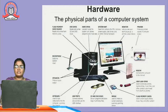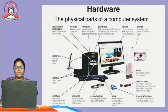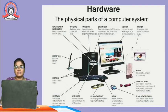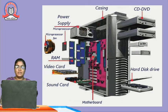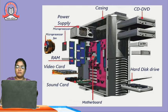Next topic is hardware. Here we have all the hardware parts of a desktop. Hardware parts include: flash memory, hard reader, DVD drive, hard drive, system unit, monitor, printer, microphone, speakers, keyboard, USB ports, CD and DVD discs, mouse, modem, USB flash drive, and flash memory cards — otherwise called the physical parts of the computer system. Inside the CPU: power supply, microprocessor, microprocessor fan to cool down the system, RAM, video card, sound card, motherboard, casing, CD, DVD drives, and hard disk drive.